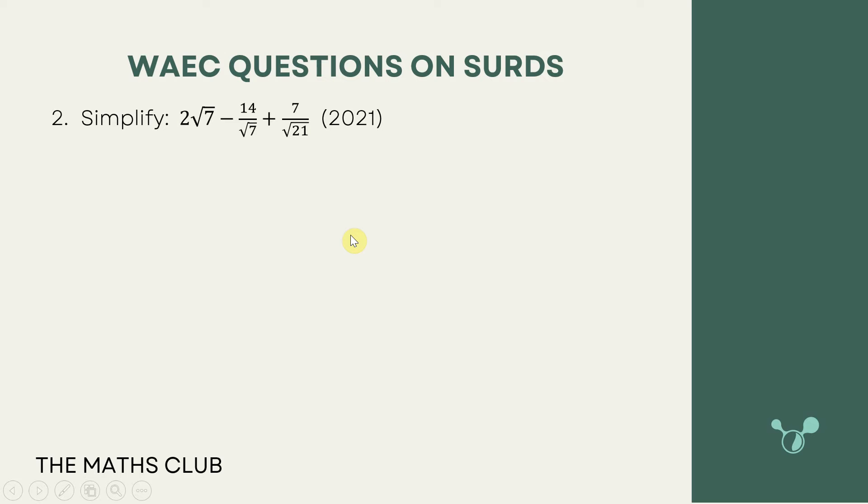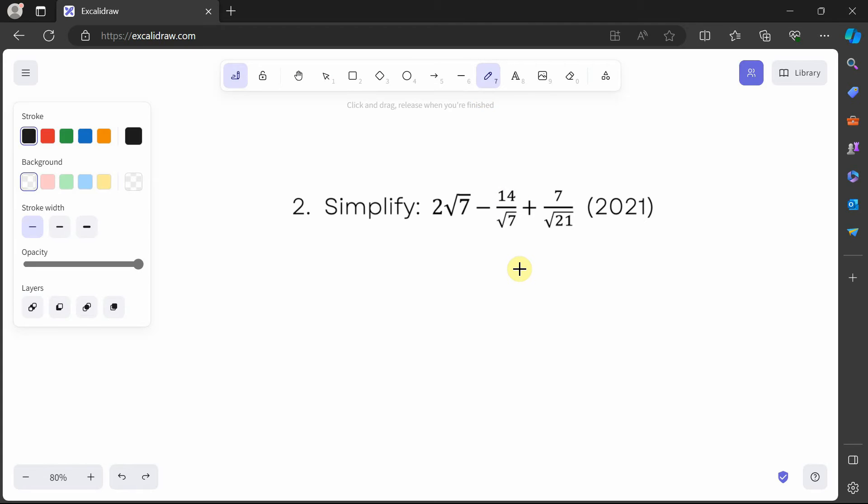The next question says we should simplify 2√7 minus 14 over √7, plus 7 over √21. If you want to try these questions before solving, you can pause the video at any point and compare our answers and approach. Let's solve this together.